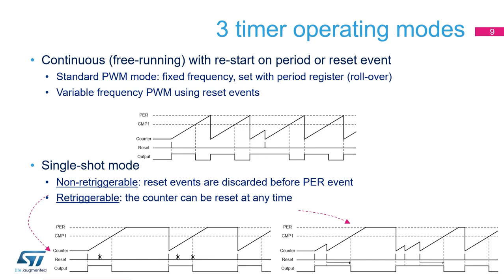In single-shot mode, the counter is started by a reset event and stops when it reaches the period value set in the HR-TIM PERXR register. Two options are available: in non-retriggerable mode, counter reset events are discarded if they occur before the end of the counting phase, ensuring an externally triggered pulse always has the same pulse width. In retriggerable mode, the counter can be reset at any time, so an externally triggered pulse may have an extended pulse width if it receives multiple triggers closely enough.